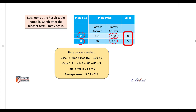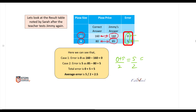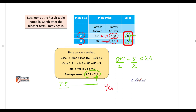From our previous lecture we know how to calculate the error, which is the difference between these two values. Our error in this case is 0 and 5. The average error here would be 0 plus 5 divided by 2, which is 5 divided by 2, which is 2.5. So if you remember, in the previous case our error was 7.5, which has now come down to 2.5.